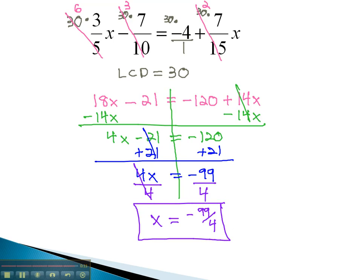With fractions, we can clear out the denominators by multiplying everything by the LCD and reducing out the denominators.